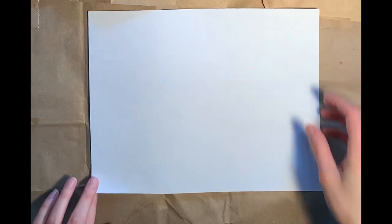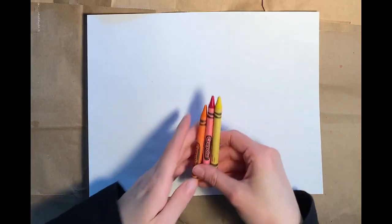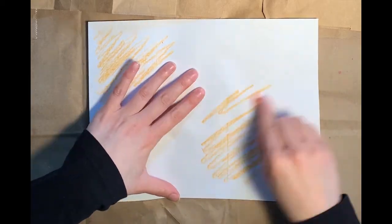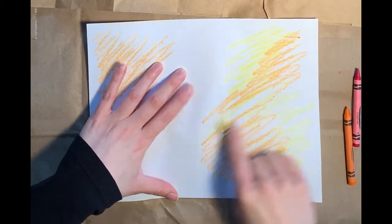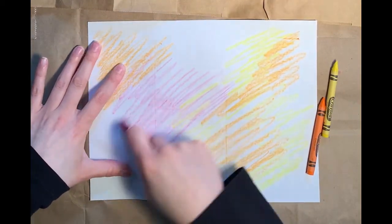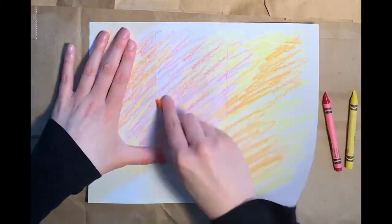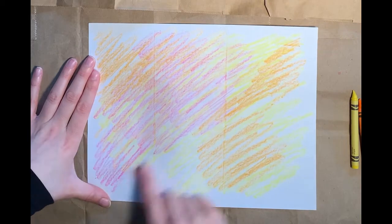For my medium colored sheet, I'm going to be using crayons. I'm going to use a medium amount of pressure and I'm going to color in the entire sheet with mostly oranges and yellows and only a little bit of my red. I want the sheet to be a little bit darker than my lightest sheet and a little bit lighter than my darkest sheet.